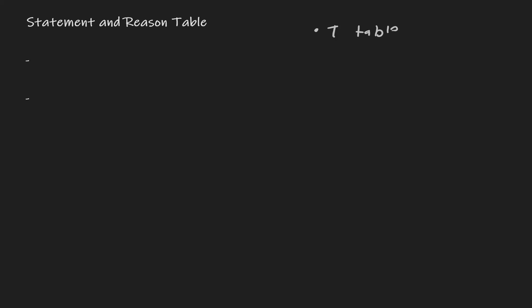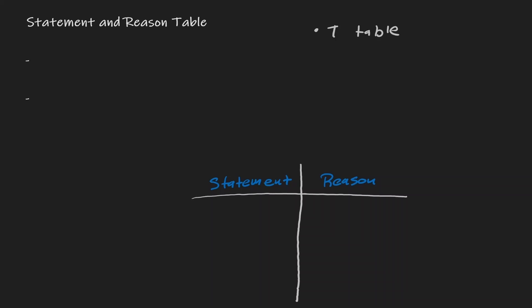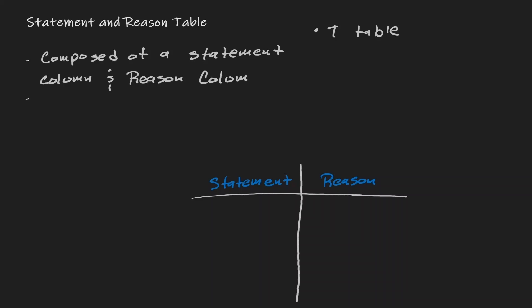So how are we going to be performing proofs in geometry? We need to introduce this tool called the statement and reason table. The statement and reason table is sometimes referred to just as a T-table, because of how it looks — it looks like a big T. We're going to have a horizontal line, and then a vertical line dividing it into two sections. In one section we write our statements, and in the other we write the reason for those statements — a statement column and a reason column.